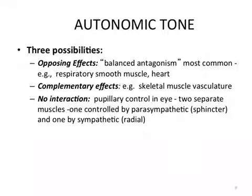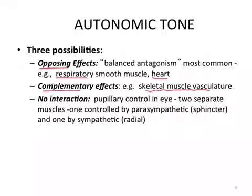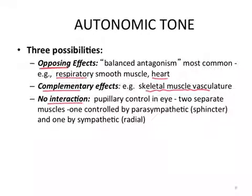There are really three possibilities for how these systems interact. You can have opposing effects — we'll give examples in respiratory bronchial muscle and the heart. You can have complementary effects, as seen in skeletal muscle vasculature, where blood flow is influenced by both arms of the autonomic nervous system, with sympathetic seeming to have greater control. And there's a mechanism where two anatomically separate structures each respond to one system — for example, in the pupil of the eye, where the sphincter muscle is controlled by the parasympathetic and the radial muscle controlling pupillary diameter is controlled by the sympathetic nervous system.